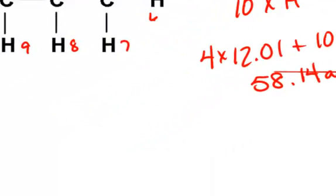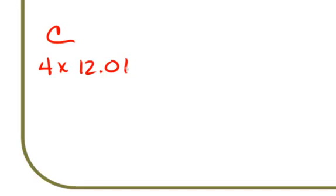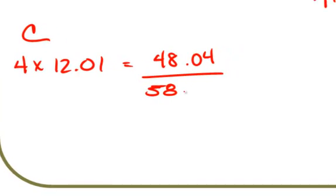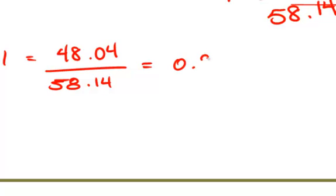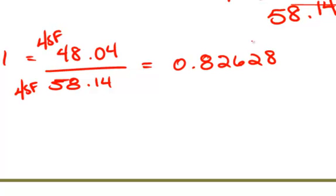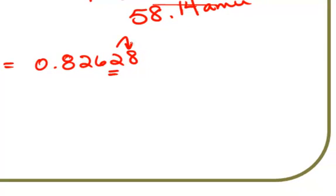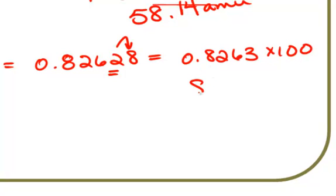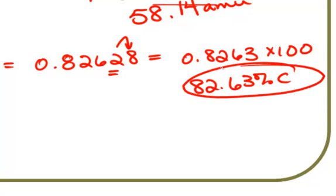If we want to look at the percent composition because of carbon, carbon is 4 times 12.01 and that gives us a mass of 48.04. We divide this by our 58.14 and we get 0.82628. We have four significant figures here and four significant figures here, so our fourth significant figure is the 2. We look to the right and the 8 tells the 2 to become a 3. So we have 0.8263. Multiply this by 100 and we get 82.63% of carbon.